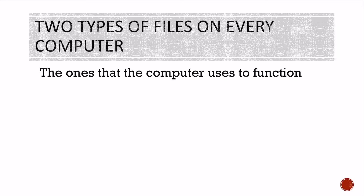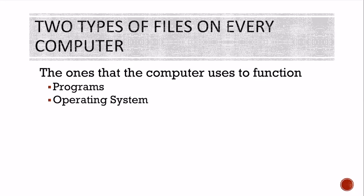There are two types of files on every computer. There are the ones that the computer uses to function — when you start up your computer, there are some files the computer must have. They are your programs, like iTunes, Internet Explorer, Safari, or Microsoft Word. There's also the operating system. Without an operating system, your computer would not start up. It tells the computer everything it needs to do, from startup to how to connect to the mouse and keyboard.